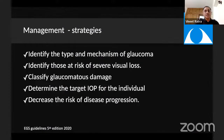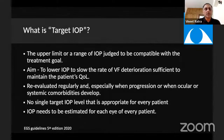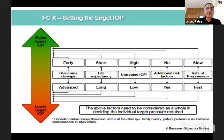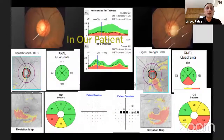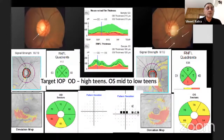We then need to classify the glaucoma damage as mild, moderate, or severe, which helps determine the target intraocular pressure for the individual. Target IOP is the upper limit or range of IOP judged to be compatible with the treatment goal that will slow the rate of visual field deterioration and maintain the patient's quality of life. If you have early glaucomatous damage with short life expectancy, high untreated IOPs, no additional risk factors, and slow rate of progression, one can have higher target IOPs — but one needs to reassess them regularly. In our patient, we set target IOPs of high teens in the right eye and mid to low teens in the left eye.